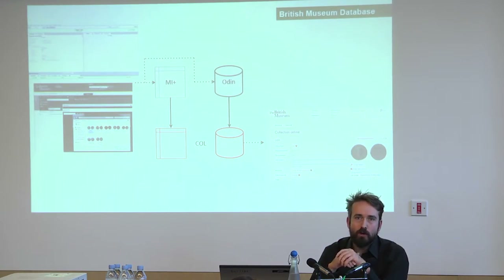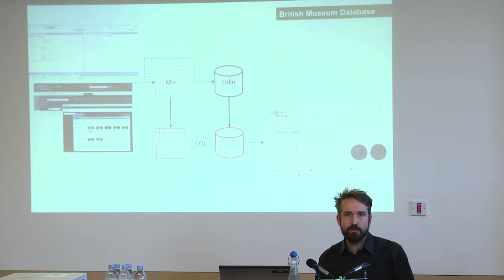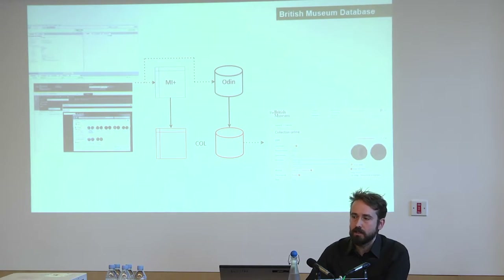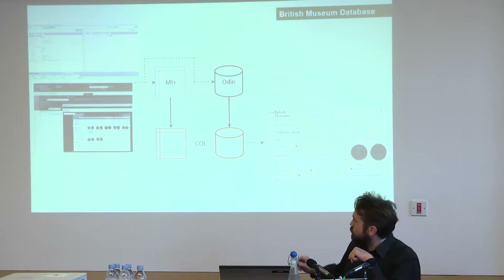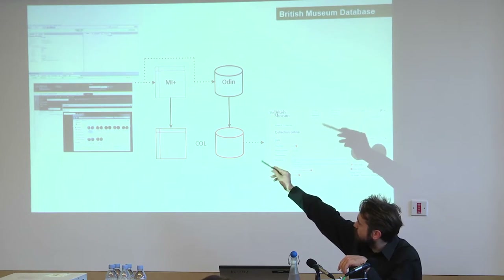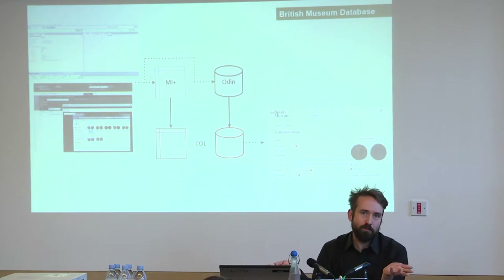A second database, currently called Odin, manages all the images associated with objects. These are the two databases we put data into: you upload images into Odin and type things into Merlin, then connect those in some way. There are also two shadow databases that disseminate this information, collectively called Collections Online. What you access from outside are these two shadow databases, which in theory contain the same information as the input databases — excluding things like personal addresses or precise object locations within the museum.